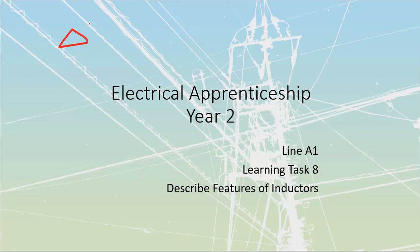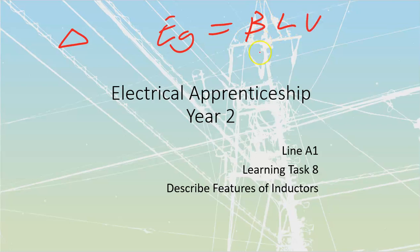Let's talk about induction. Induced voltage is what happens any time we go and get Faraday's Law, which we took a look at in the previous one — B, L, and V: flux density, length of active conductor, and velocity, or relative movement between the flux and the conductor, whether the conductor is moving past the flux or the flux is moving past the conductor. Increasing flux, length, or velocity gives us an increase in voltage.